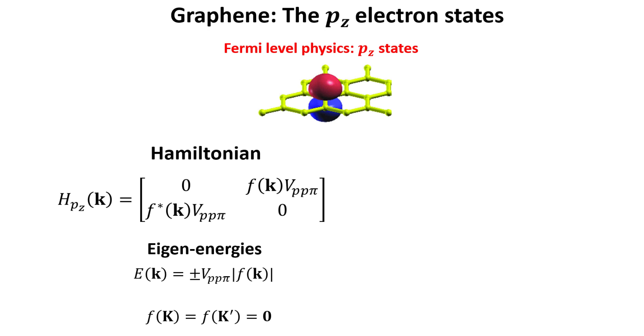The band structure of the pz states is easily obtained by diagonalizing the two by two Hamiltonian. We obtain two energies which differ only by a sign. The energy with the positive sign is the conduction band and the energy with the negative sign is the valence band.